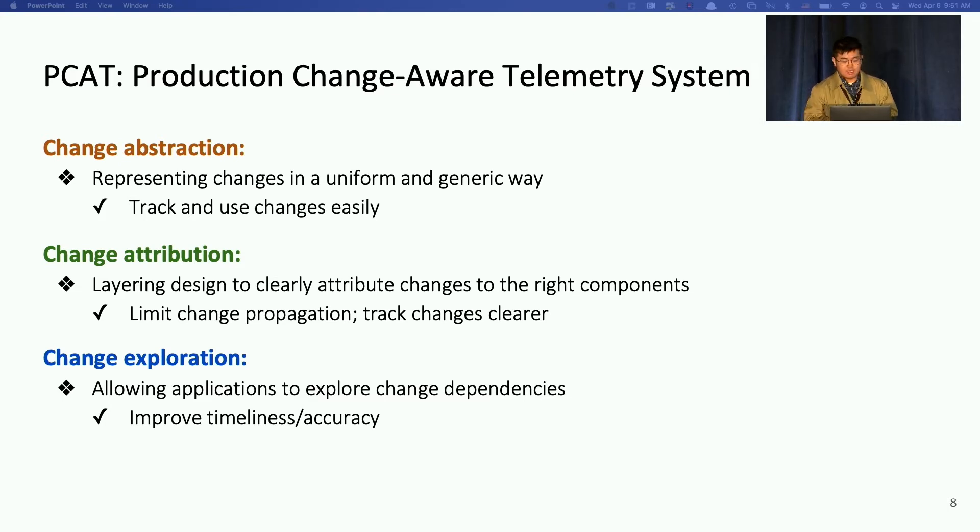PCAT has three key components, change abstraction, attribution, and exploration. So by change abstraction, we mean a uniform and general way to represent these changes so that we can easily track and use them. By change attribution, we mean layering design that help clearly attribute change to the right components in the telemetry system. This will help limit the change propagation because of layering and track changes easily. Finally, we would like a lot of occasions to explore the relations, especially we call dependencies among changes to improve timeliness or accuracy.